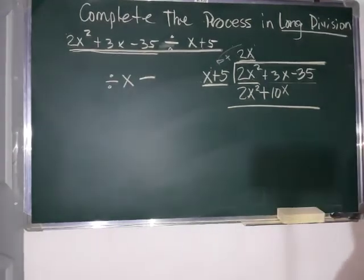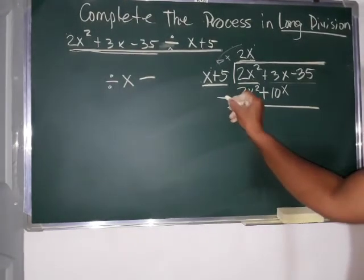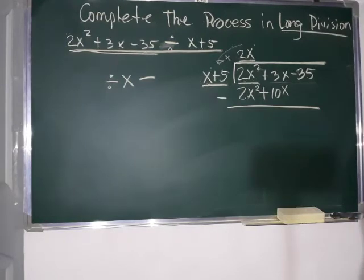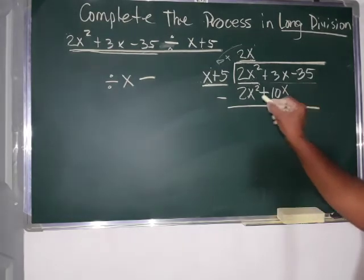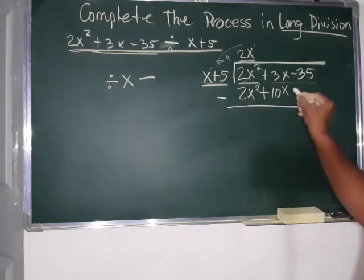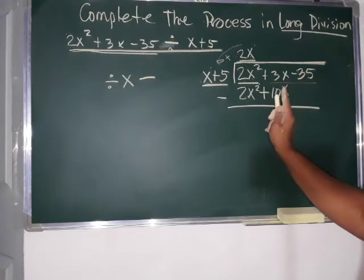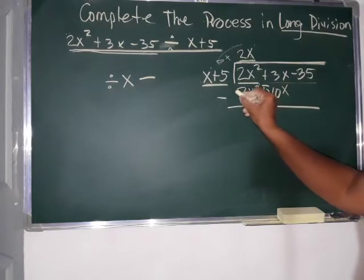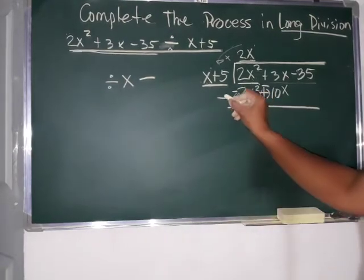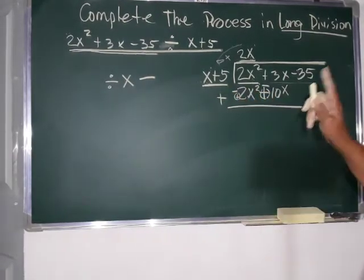Next. Subtract. Okay? Mag-subtract na tayo. But, remember, the rules in subtracting polynomials. Change the sign of the subtrahend. Then, proceed to addition. So, ang subtrahend natin dito ay ito. So, anong gagawin natin? I-change ang sign. So, ito, positive magiging negative. Ito, positive. Kung wala nakasulat, ibig sabihin positive, ha? So, this is positive. Change to negative. Then, proceed to addition.